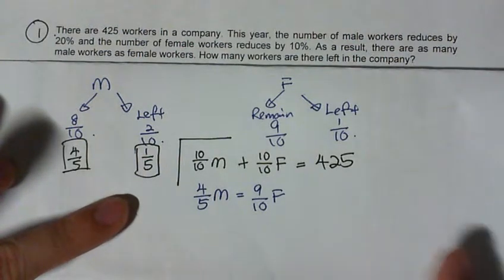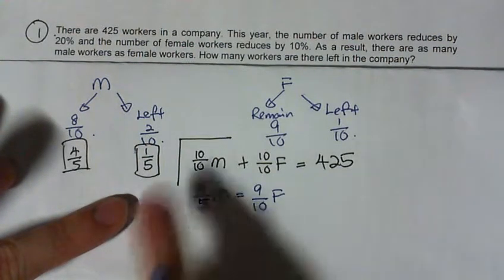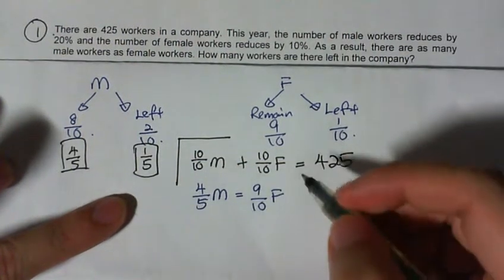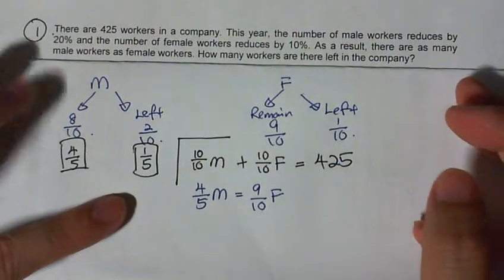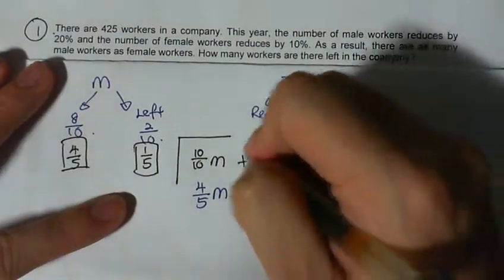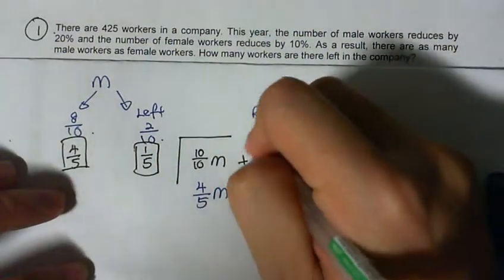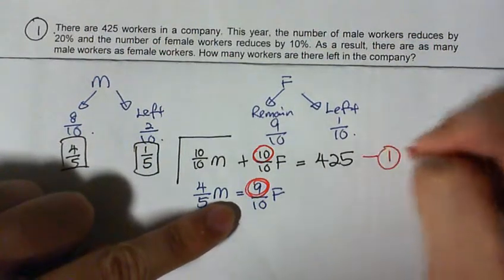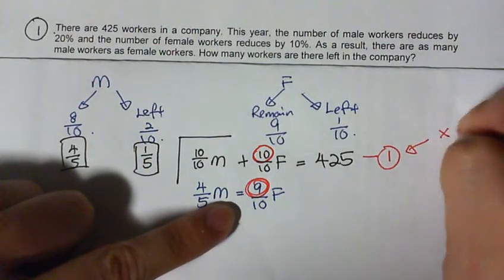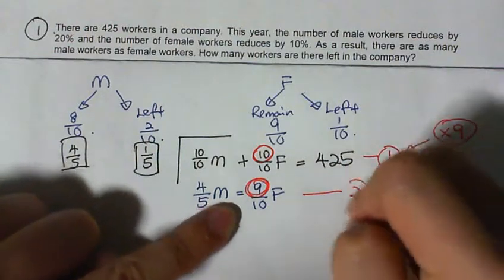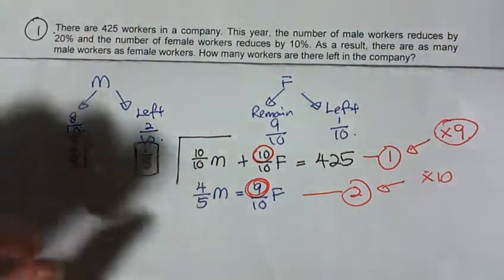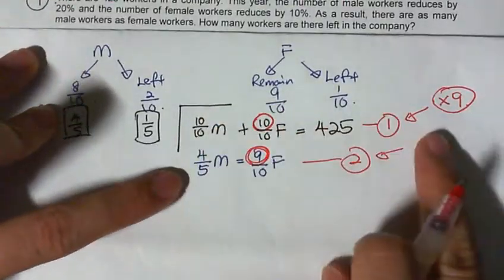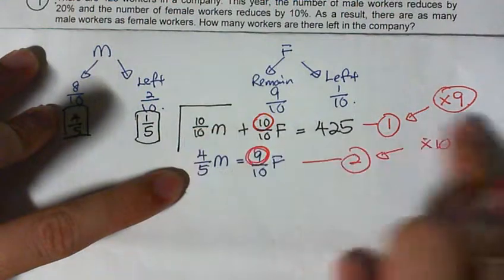Looking at this, I know that I got to get rid of one set so that I can work it up. So in this case, let's make female the same. Female here, I want to make female the same. The numerator has to be the same. So to make numerator the same, this first set of equation I have to multiply by 9. This second equation I have to multiply by 10.